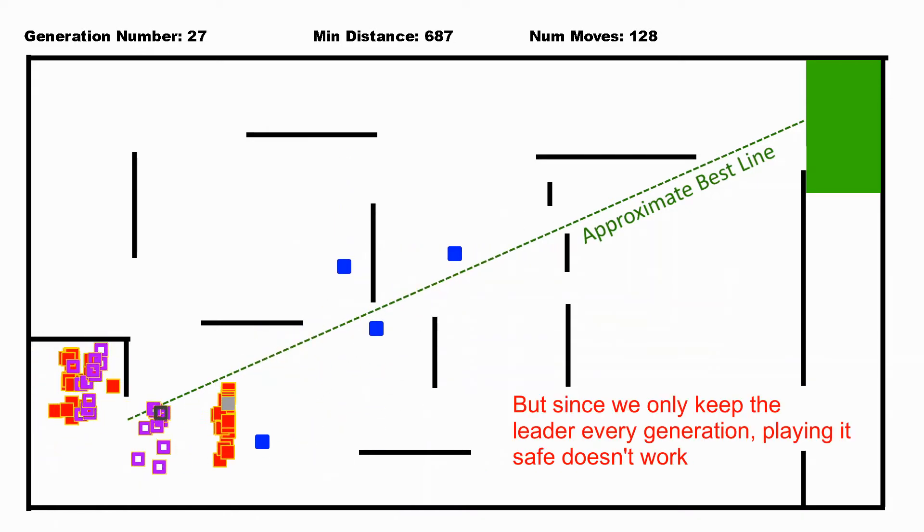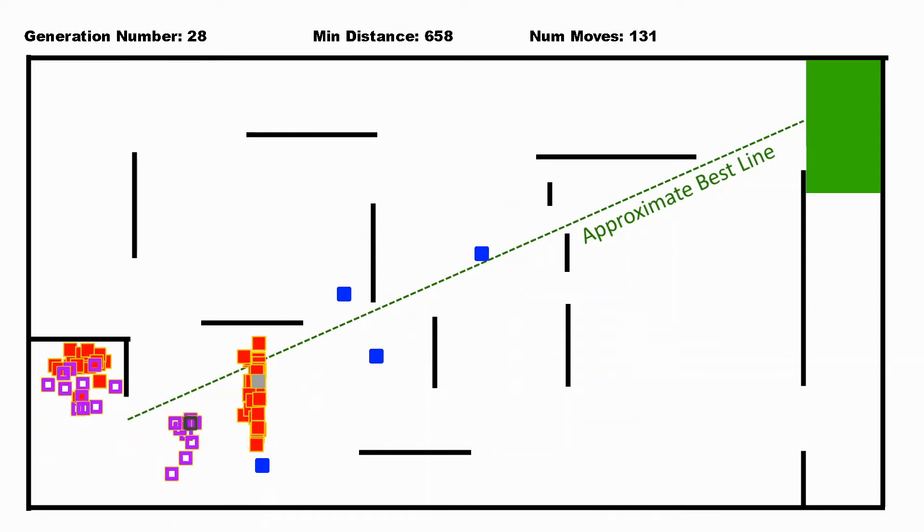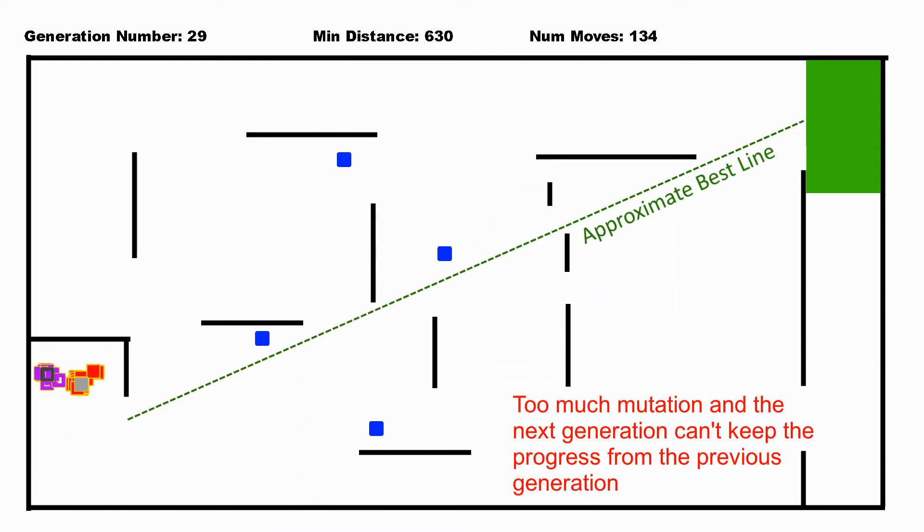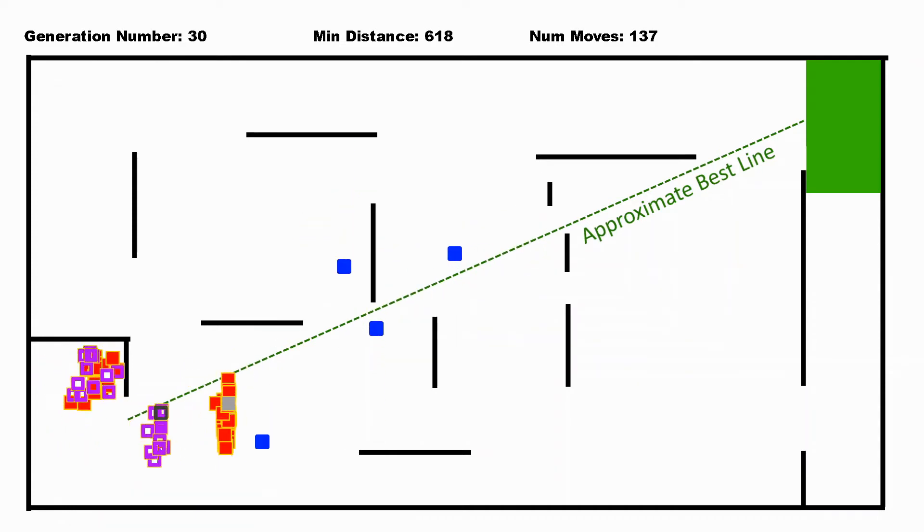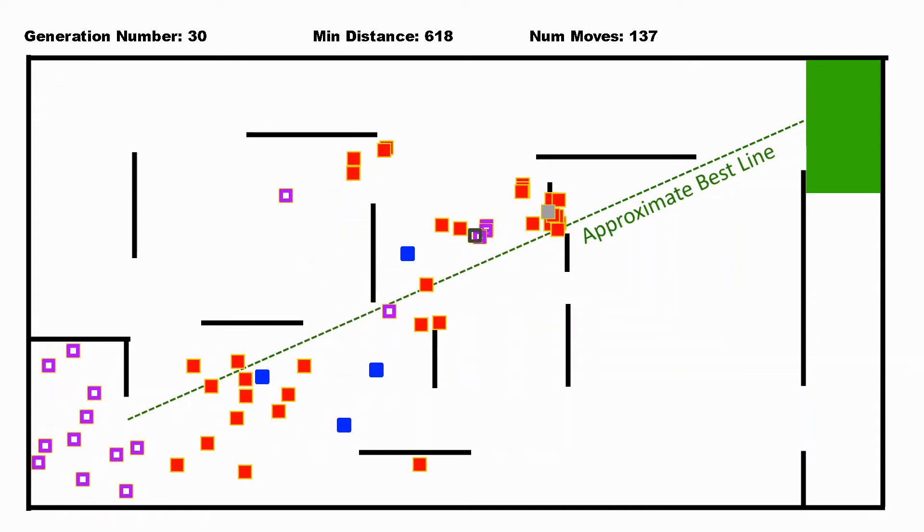What I've seen before is if I have the mutation rate set too high, they'll go and they won't be able to pass all these obstacles, and things will just start to bounce around here in the middle.